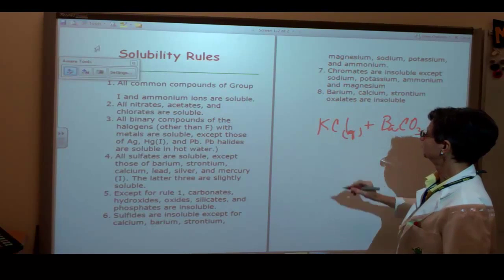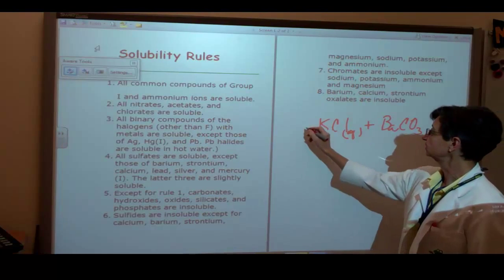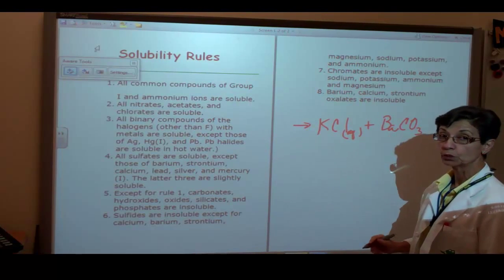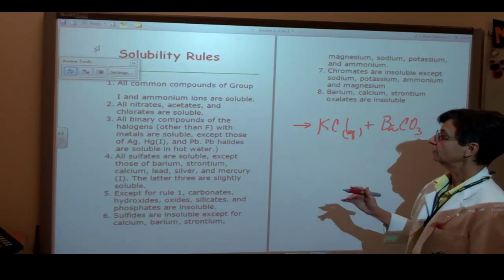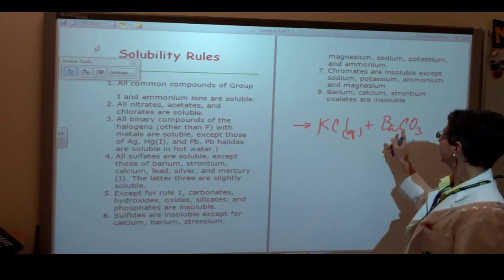I am going to look up potassium chloride. It says all common compounds of group one and ammonium ions are soluble, so right away this is telling me that potassium chloride is going to be a soluble substance. So I am going to put AQ right there. This is the product of that reaction we were working on.